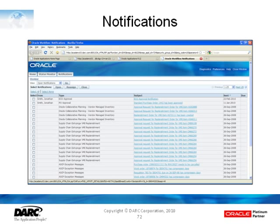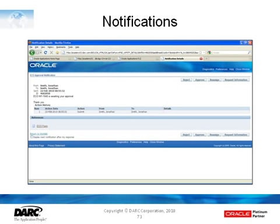We're going to go ahead and click on our ECO approval notification, and here we can see that it's telling us that ECO M1-1048 is waiting your approval. When we look more at this webpage we see the ECO form link. If I actually wanted to look at the details of this ECO I could click on this link and the form would open up and allow me to review the information. You can see on here too that we've got the reject and approve buttons that we saw when we set up the workflow.